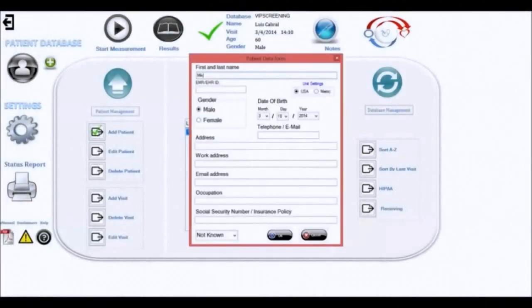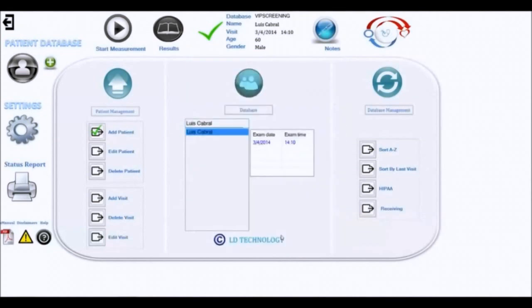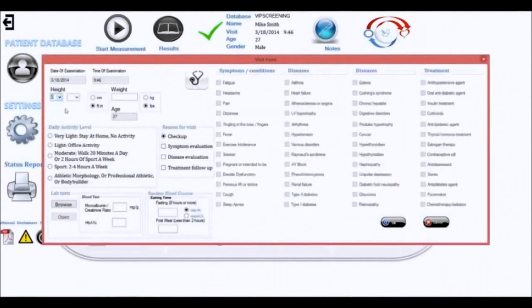To register a patient, you will need to enter the patient's first and last name, gender, and date of birth. On the next page, you will need to enter the patient's weight, height, and activity level. Clinical information of the patient can also be entered, such as symptoms, diseases, and treatment.